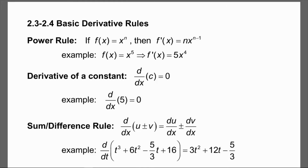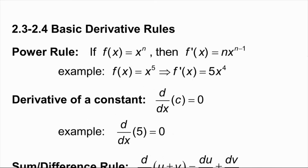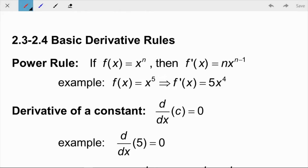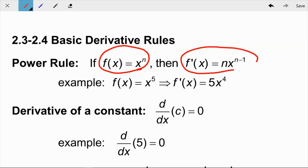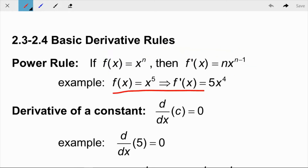The first rule is the Power Rule. When we have a polynomial expression like x to the n, to take the derivative we bring the exponent down as the coefficient and reduce the exponent by one: n·x^(n−1). For example, if f(x) = x^5, then f′(x) = 5x^4.